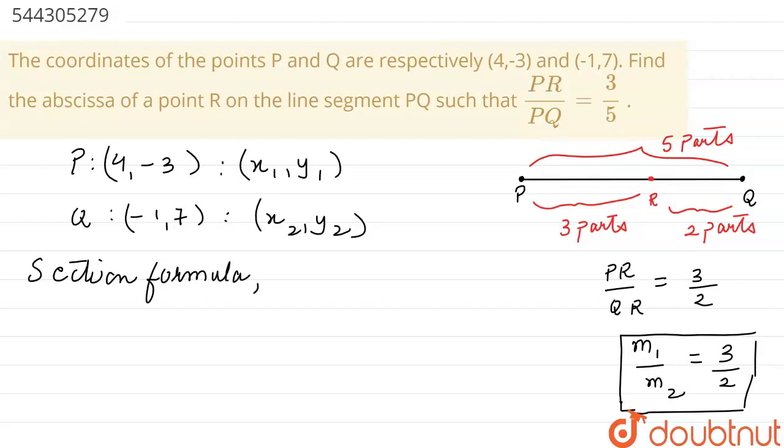But in question, we just need the abscissa, the x-coordinate. The x-coordinate of point R, I can write it from the formula as m1·x2 plus m2·x1, whole upon m1 plus m2.